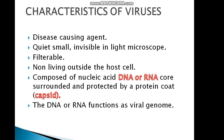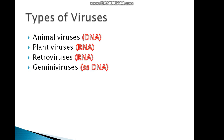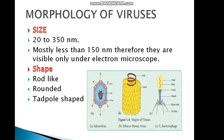If we look at the characteristics of viruses, they are composed of DNA or RNA. There are different types: animal viruses, plant viruses, retroviruses, and geminiviruses. Retroviruses have a special enzyme — reverse transcriptase — which converts single-stranded RNA to double-stranded DNA. In morphology, size is approximately 20 to 350 nm.